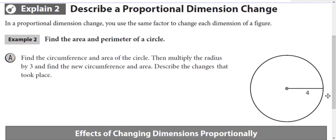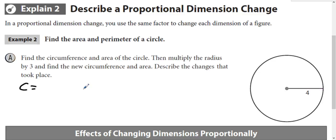We're going to start by looking at a circle — its circumference and area, which are like the perimeter and area of the circle. The radius starts out as 4, and the formula for circumference is 2πr. With radius 4, we multiply that out using 3.14 and we get 25.12.